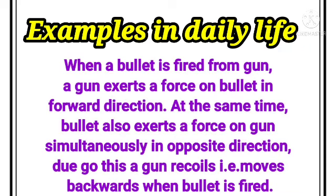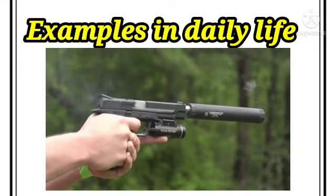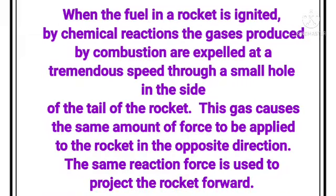When a bullet is fired from a gun, the gun exerts force on the bullet in the forward direction. At the same time, the bullet also exerts force on the gun simultaneously in the opposite direction. When the fuel in a rocket is ignited by a chemical reaction, a reaction force is applied to the rocket in the opposite direction, and the same reaction force is used to project the rocket forward.